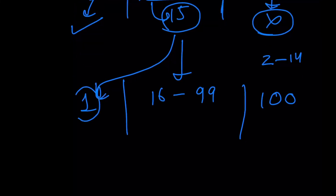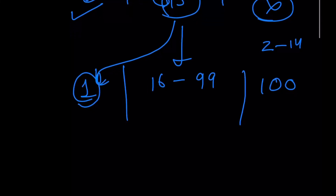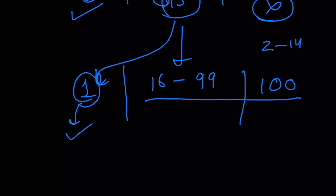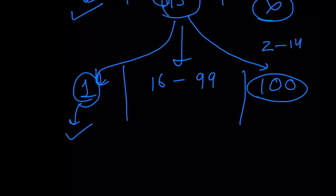If person 15 sits on seat number one, then we are guaranteed to hit success — because each of the passengers from 16 to 100 are going to get to sit on their own seats. If person number 15 sits on seat 100, then no matter what happens, we're going to eventually hit failure, because person 100 already has person 15 sitting on his seat, so he can't choose his own seat — in fact, he has to choose seat number 15. So these two cases are exactly the same as before.